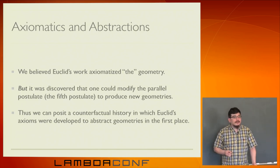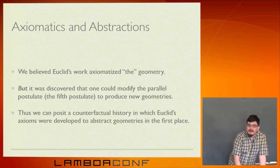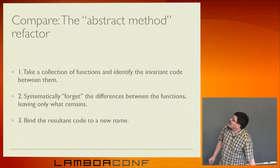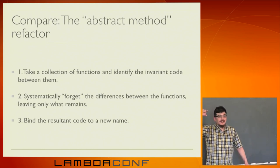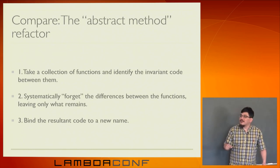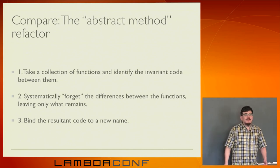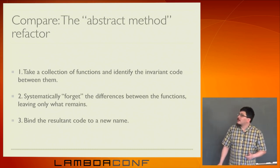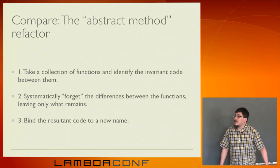These things are very relevant to programming. Here's a simple example: take a collection of functions and identify the invariant code between them, systematically forget the elements that differ, pull out a new function, pass in those different bits — and the Eclipse IDE, among others, has been taught to do this. You can apply the 'extract function' refactor. This is an example of the abstract method. When Eclipse does it, it doesn't tend to produce beautiful structures such as rings — but you can recognize the deep commonality in what's going on.